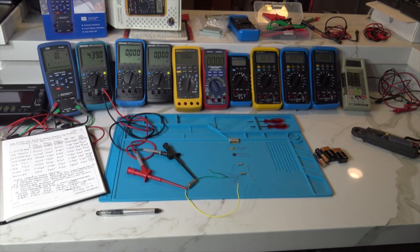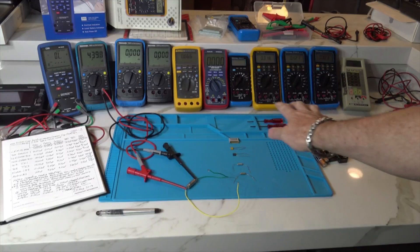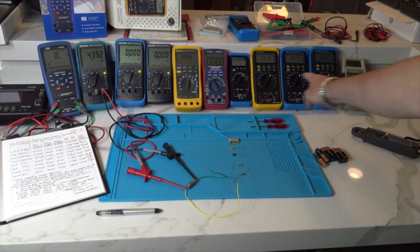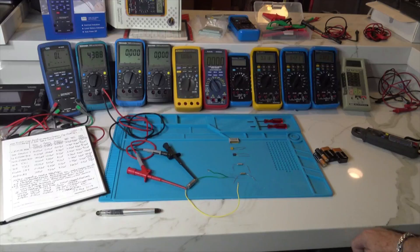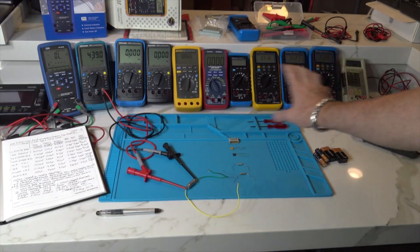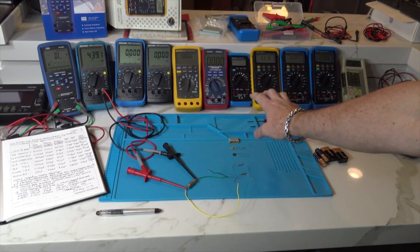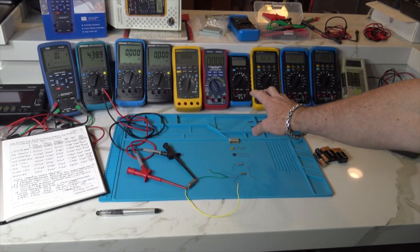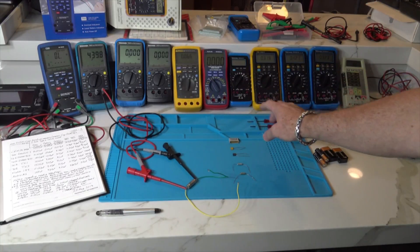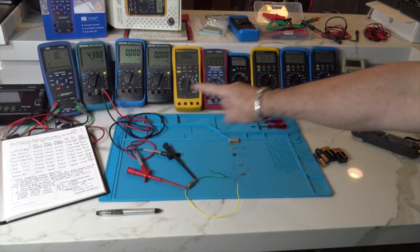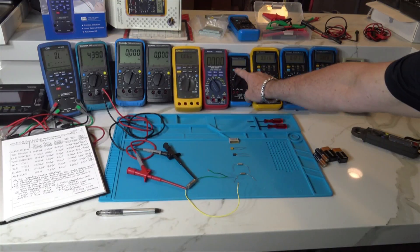Okay, so what I have here is I have all these multimeters lined up, and they all have capacitance features or functions where they can measure capacitance. And they're all auto-ranging, except for this little Tektronix.